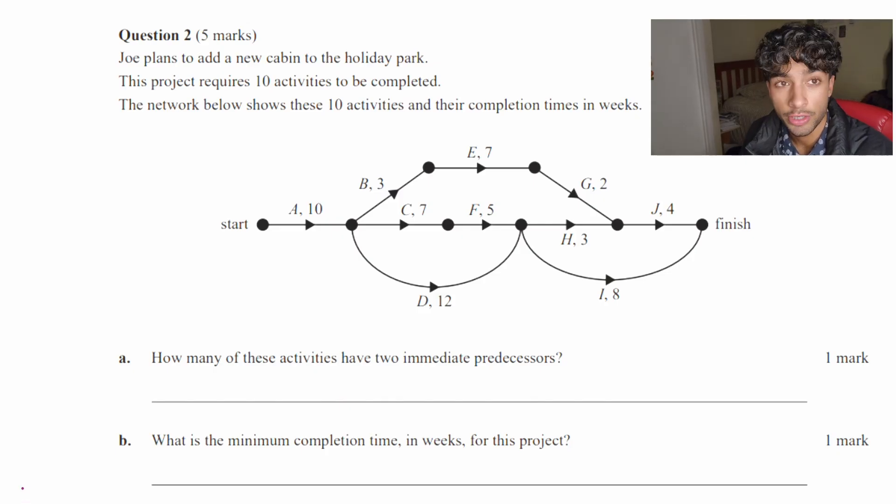Now this question is from the VCAR 2022 exam, exam two, and it is question two. That's a lot of twos. But anyways, so we have a project type question where it's a digraph. And question 2A says, how many of these activities have two immediate predecessors? So when I think predecessors, I think it's best to start from the end and then go that way to the start.